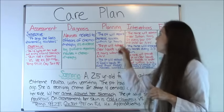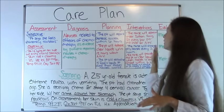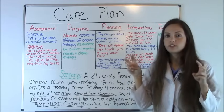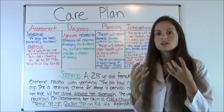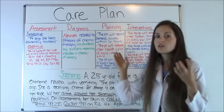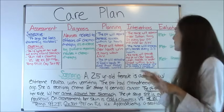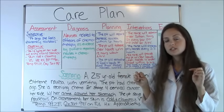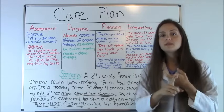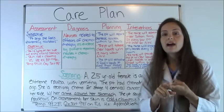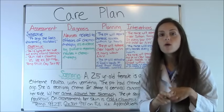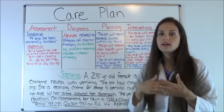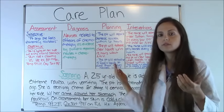Now we're going to develop our interventions — nursing interventions are what we're going to do as the nurse so the patient can meet their goals. Two things to know about interventions: they have to be specific to the nurse, meaning the nurse is going to do them, and they have to be measurable so whenever another oncoming shift comes on they can follow it exactly as written.